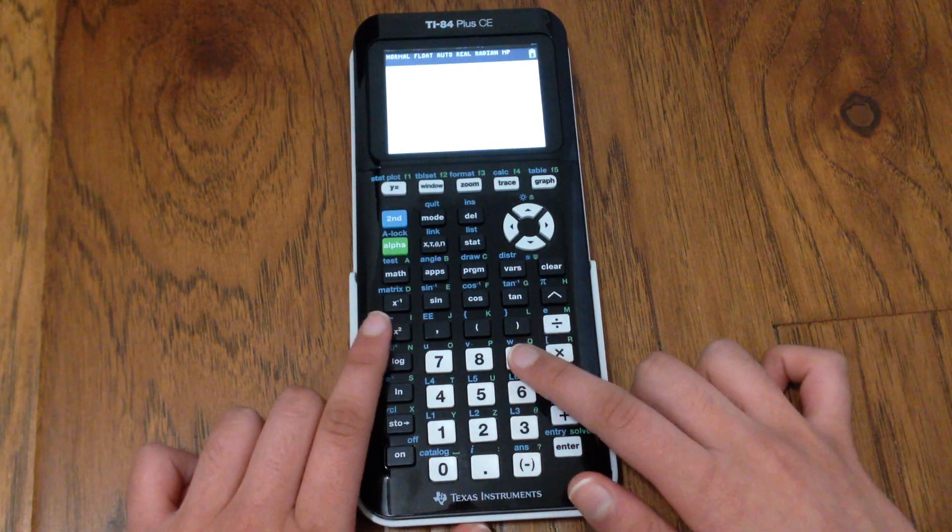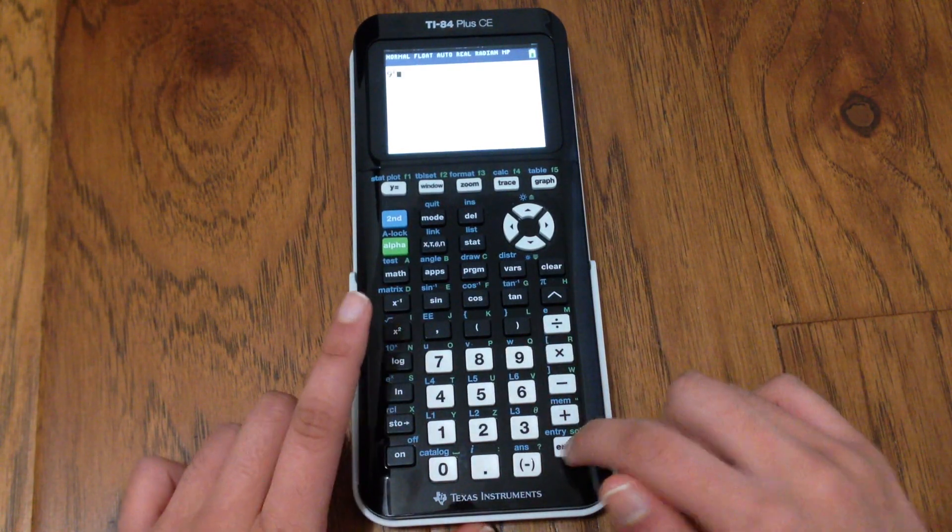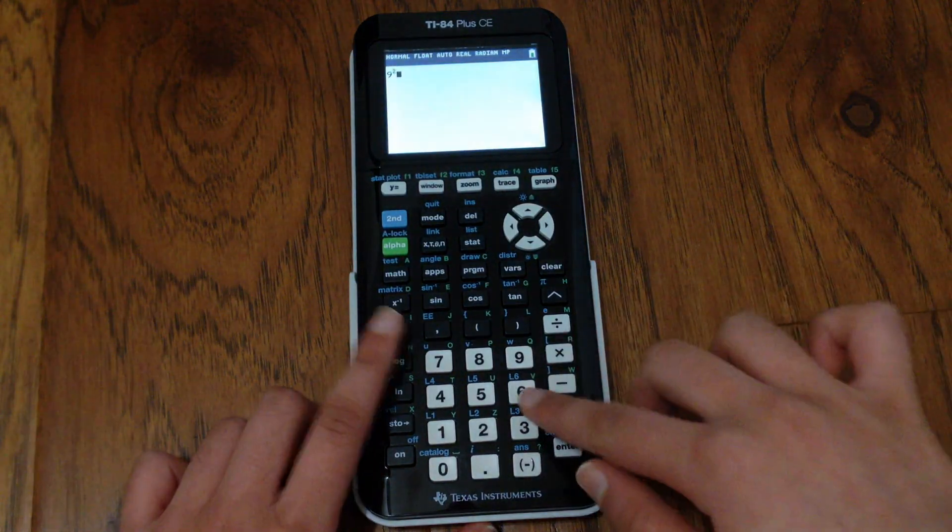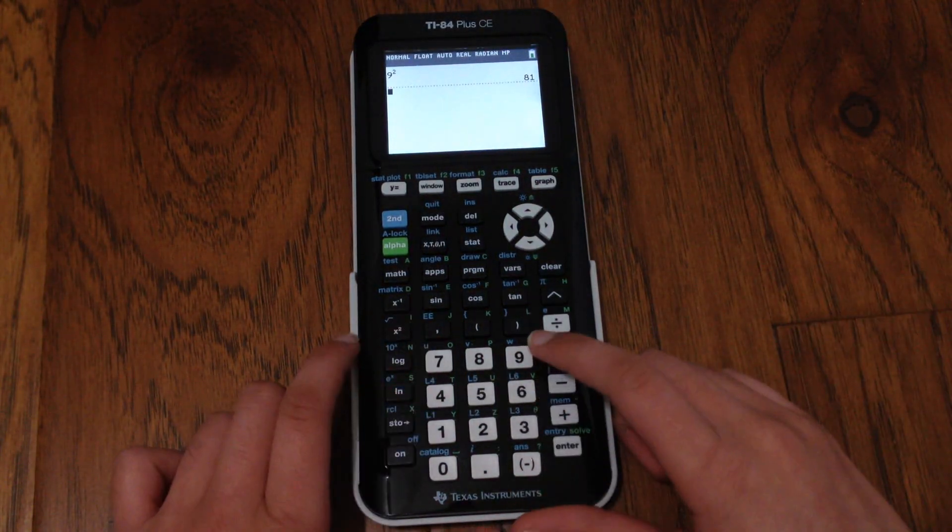To square a number on your TI-84 calculator, you have a button right here called square, and that will square your number for you.